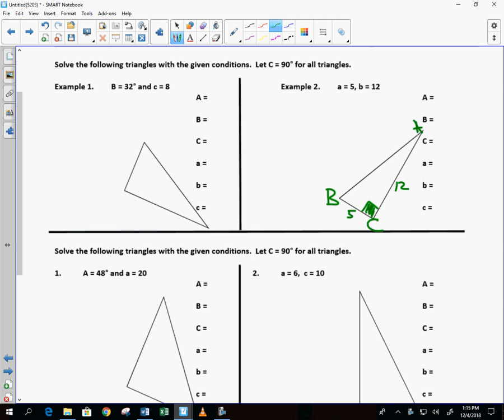So right now I've labeled the appropriate parts of the triangle. Is there any question about that? For the people who were gone yesterday, again, 5 is A. Little A is the side, big A is the angle. They are opposite each other. So as I write this out, C is 90 degrees, side A is 5, side B is 12.